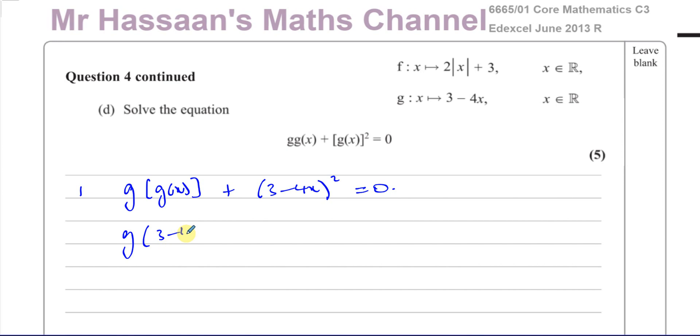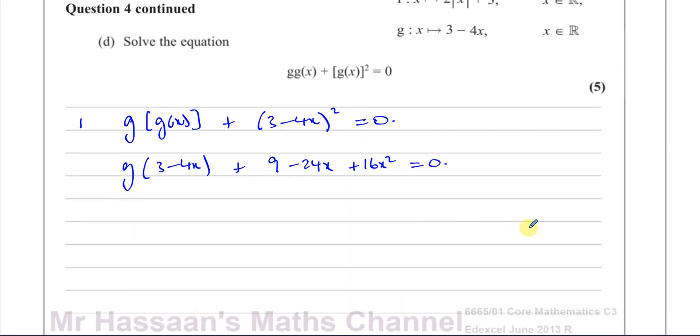So let's do this now. We've got to find g of 3 minus 4x plus, let's get this ready, that's 9. If you square this, multiply those together, that gives you minus 24x plus 16x squared equals 0. Square this, multiply those together, double it, and square the last term.